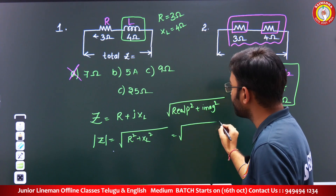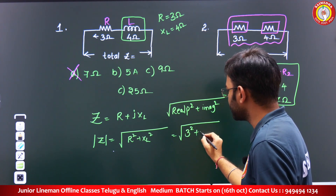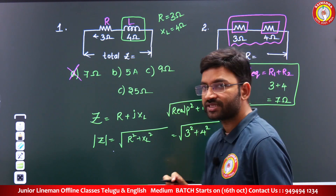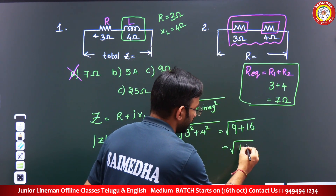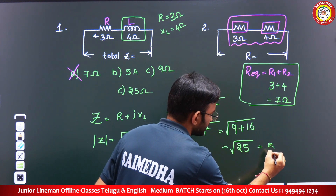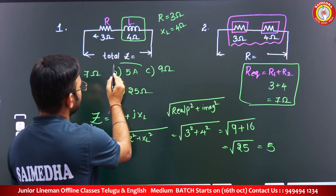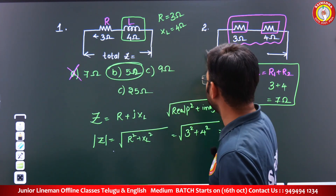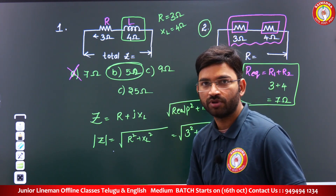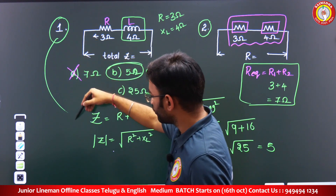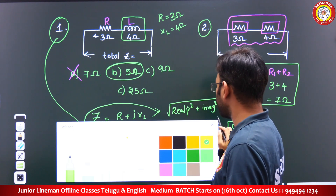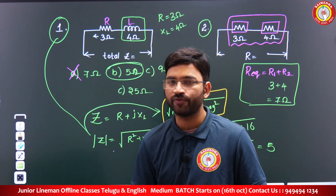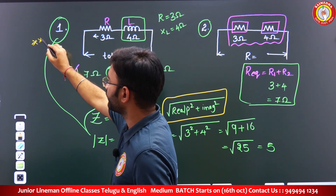Substituting these values: magnitude of impedance equals square root of R squared plus XL squared, which is square root of 3 squared plus 4 squared. That is square root of 9 plus 16, which is square root of 25, which equals 5. So the answer is 5 ohms. The correct answer is 5 ohms. If it is a pure resistive load, direct addition; but when mixed loads (resistive and inductive) are given, we must follow this relation: real part squared plus imaginary part squared.